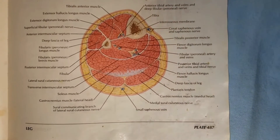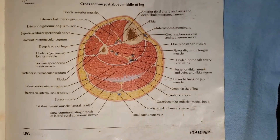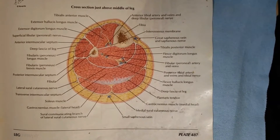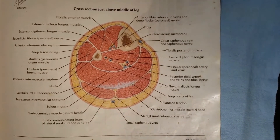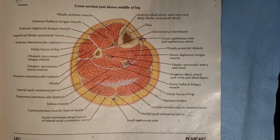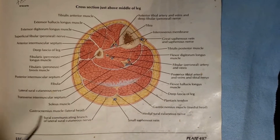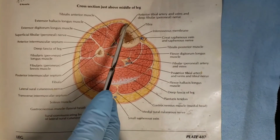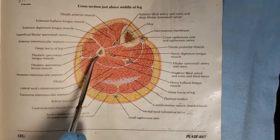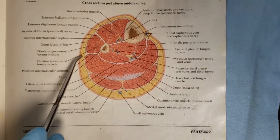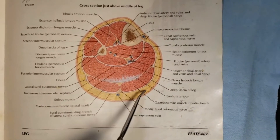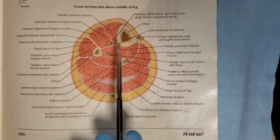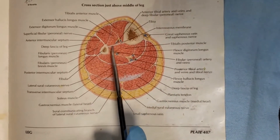This video is about the anterior compartment of the leg. What we're looking at here is a cross section of the leg — between the knee and the ankle. This is from Netter's Atlas. We can see in the cross section the tibia and the fibula, the skin and subcutaneous fascia, or the superficial fascia, and binding the tibia and the fibula together is the interosseous membrane.